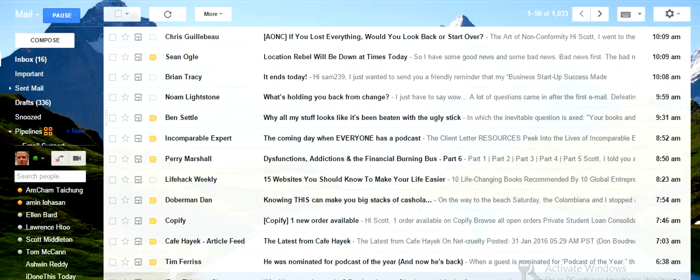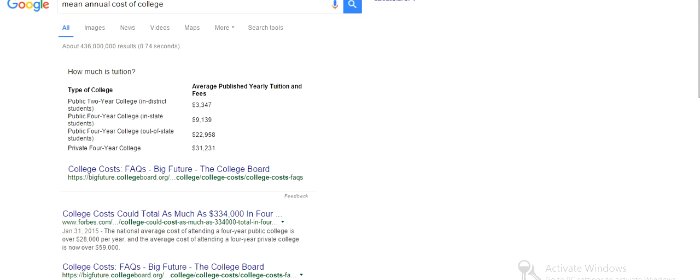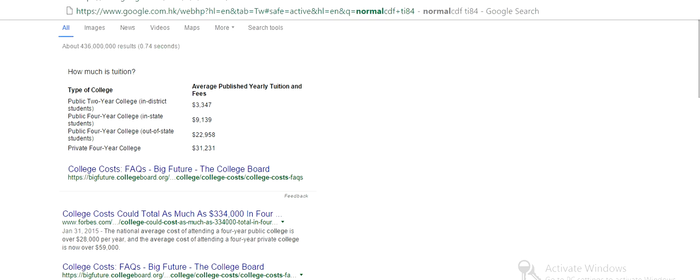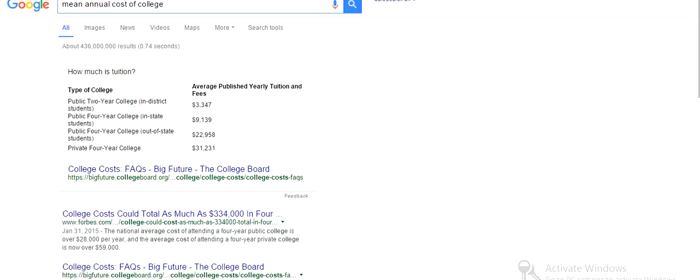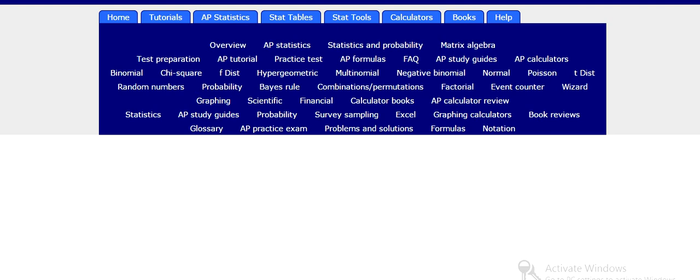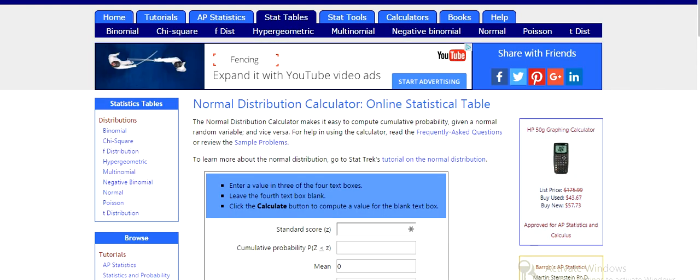And now we want to go to StatTrack. So we type in Google StatTrack normal distribution calculator.